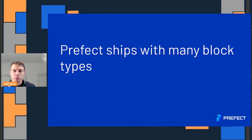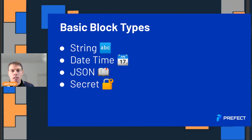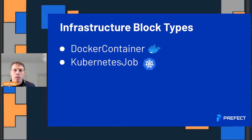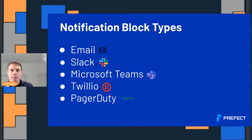Let's talk about block types that Prefect offers. We have a whole bunch right out of the gate: string, datetime, JSON, and the secret block we've seen. Then we have code storage block types — places where you can put your code that will run and be fetched at runtime: GitHub, AWS, Azure, and Google Cloud Storage. Then we have infrastructure types: a Docker container or Kubernetes job that you can run your code in. And we have notification block types — email, Slack, Microsoft Teams — and just yesterday we added Twilio and PagerDuty options.